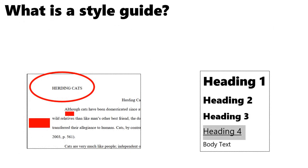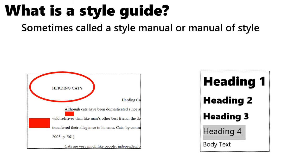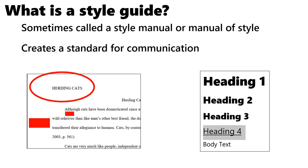So what is a style guide? A style guide is sometimes called a style manual or a manual of style. A style guide creates a standard for communication — it may say you need to use a specific type of language. It may give you certain formatting guidelines. For example, here on the left you can see this is from MLA, where we have a specific heading, one-inch margins, and double-spaced lines. It may also cover things like using certain fonts for different types of headers or different parts of text.